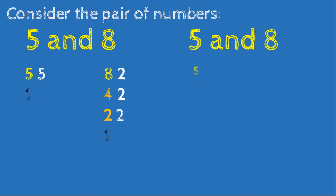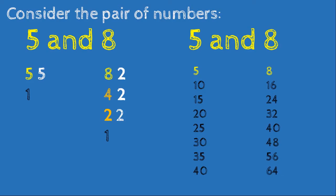Next we find the multiples of 5 and 8. Multiples of 5: 5, 10, 15, 20, 25, 30, 35, 40. Multiples of 8: 8, 16, 24, 32, 40, 48, 56, 64.